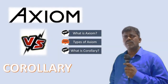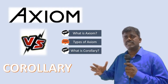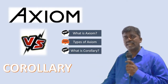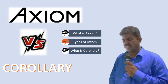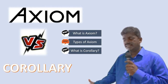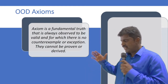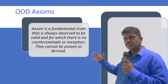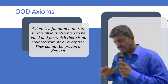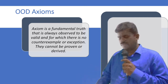Hello friends, today we are going to see about axioms and corollaries. What is the difference between axioms and corollaries? First, when you see axiom, an axiom is a fundamental truth that is actually observed to be valid and it is not proven. So that is axiom.